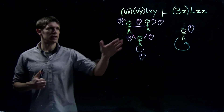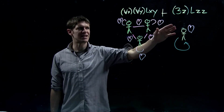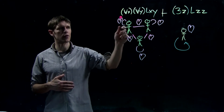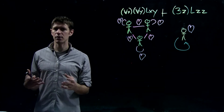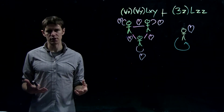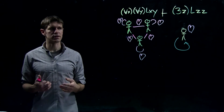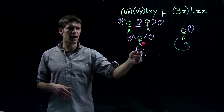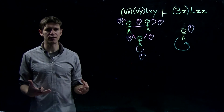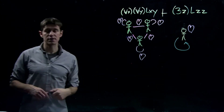In this proof we have the universally quantified formula AX AY LXY, and the conclusion is EZ LZZ. In English, AX AY LXY says everyone loves everyone. For example, in a domain of three people — Al, Liz, and Tech — not only does Al love Liz and Liz love Tech and Tech love Al, but also Al loves Al, Liz loves Liz, and Tech loves Tech. Every individual loves themselves as well as everyone else. We want to reason to the conclusion that someone loves themselves.